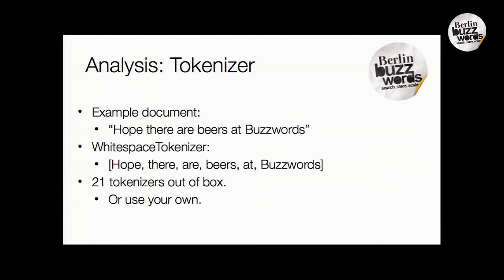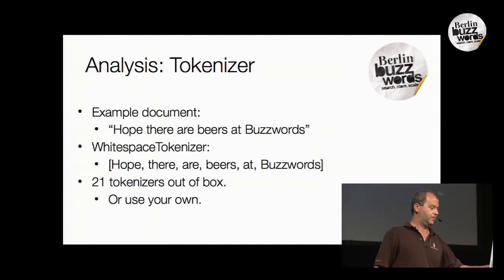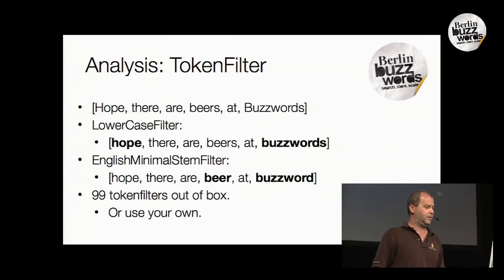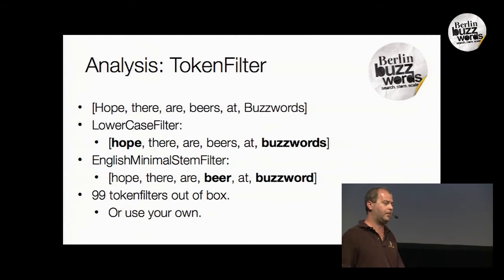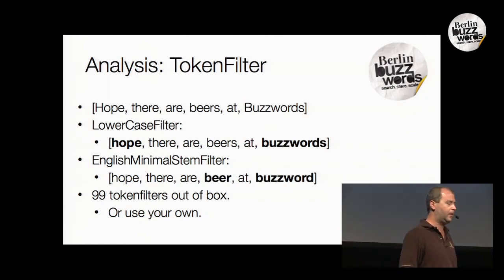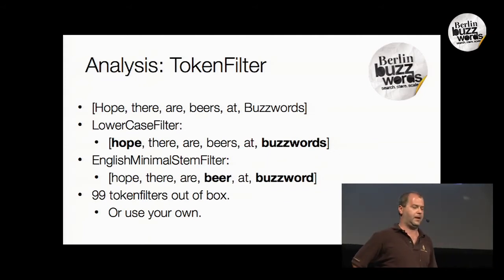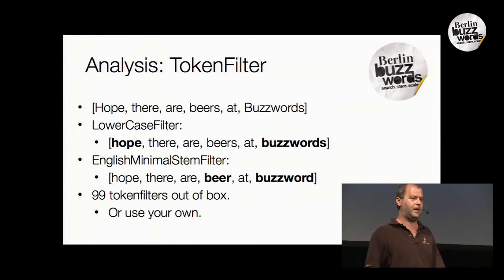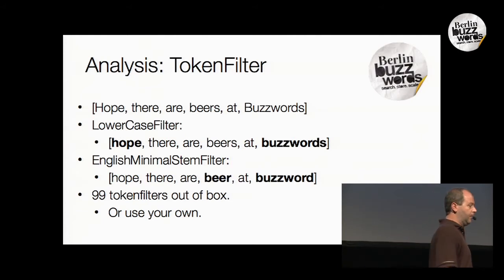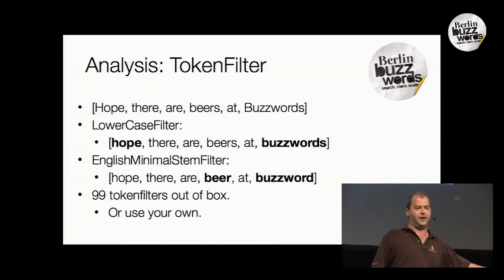There's a whitespace tokenizer in Lucene, plus about 20 more — some very fancy and complicated, some very simple. For token filters, we want normalization so people can type uppercase or lowercase and not worry about plural versus singular forms. We have a lowercase filter that lowercases words, and a stemmer that removes plurals. There are almost a hundred filters in Lucene for various tasks. It's flexible — you can chain them in any order: synonyms, lowercase, stop words, whatever. You can also write your own.